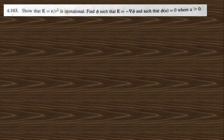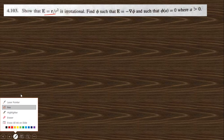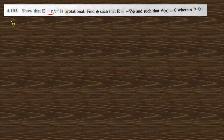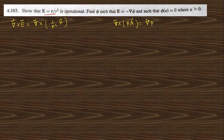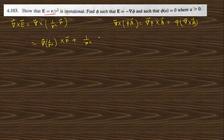Going directly to question 4.103: show that E = (1/r²)r is an irrotational vector. To prove irrotational, we need to find the curl of this vector. Curl of E means curl of (1/r²) times r-vector. This is of the form curl(φA), where φ = 1/r² and A = r.